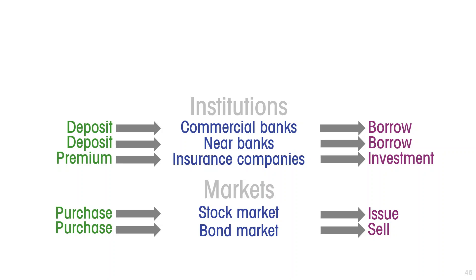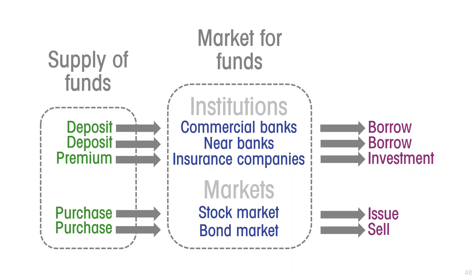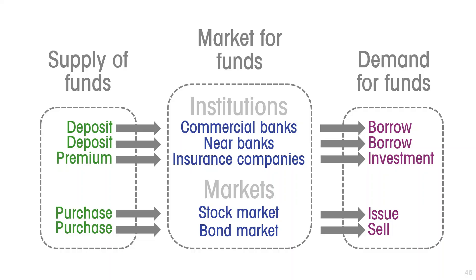We want to abstract from all of these different channels and treat the entire financial sector as one giant market for investable funds, ignoring the details of the differences amongst channels. All of the different ways that savers deploy their savings we simply call the supply of funds, and all of the different ways that investors access those funds we call the demand for funds — we are aggregating the entire financial sector.